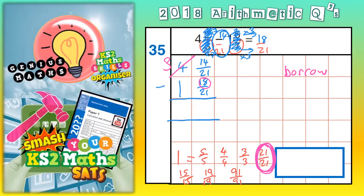So we're going to transfer the one we borrowed from this 4 over to the 14 21ths. So you're going to add 21 21ths. So basically, you're now dealing with 14 21ths add 21 21ths is 35 21ths.